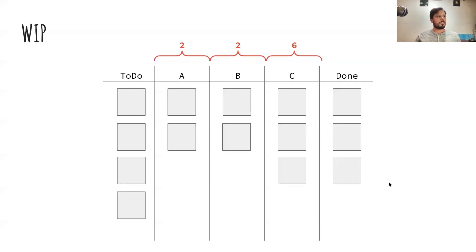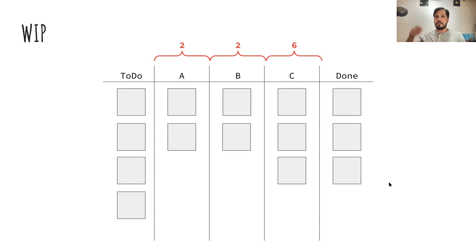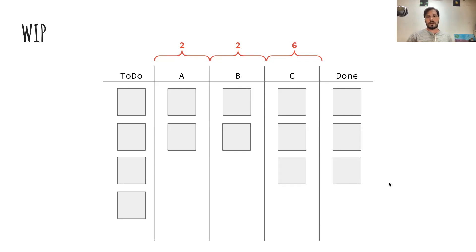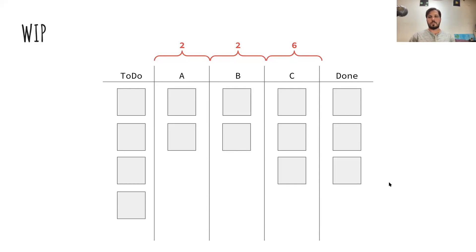Even if you change the WIP limit to six and you're under it, if you're varying between zero and six, you're still not controlling WIP. There's a lot of variance that can cause issues with your cycle time, throughput, and predictability. I think of WIP limits as WIP targets — this is where we want to be. We want to be at six things or three things or wherever we agreed. If we can stay close to and consistent at those numbers, we're working towards predictability.